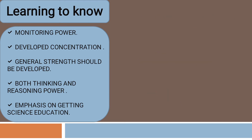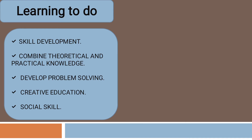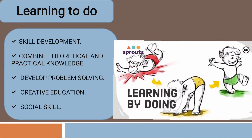Next is learning to do. Learning to do, which is our concept, relates to learning by doing — the child's actions and developing various skills. This pillar relates to the child's personality development and social skills development.